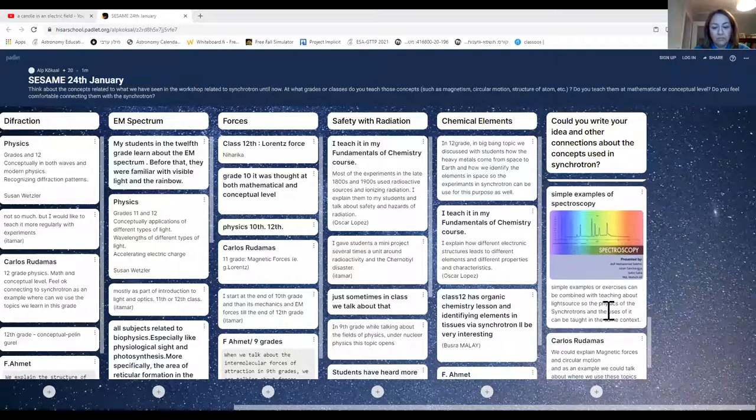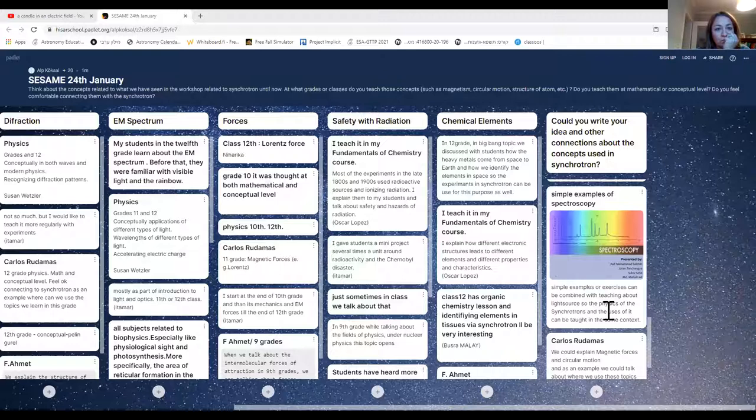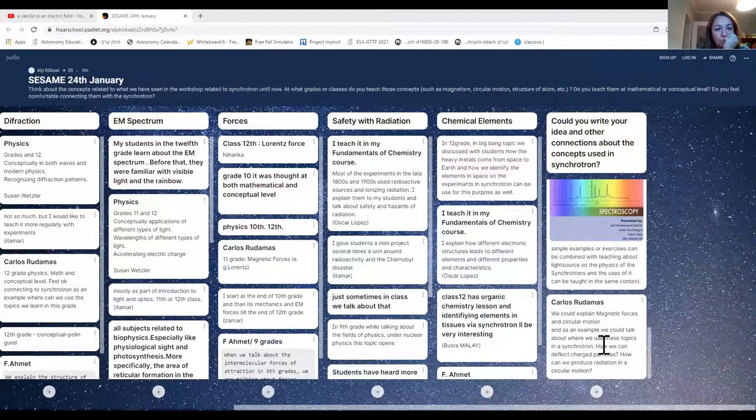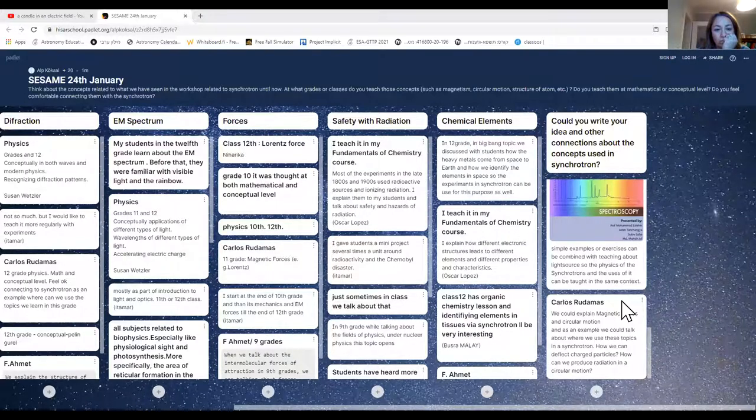Next note we have from Uslan, writes in 11th and 12th grades, we can teach magnetic field, circular motion, electromagnetism, and x rays. During that time, we can explain little information about synchrotrons, and we can plan extra lessons for students who are interested in this subject. This is a great idea. Thank you very much. And the next note is also for me, you can see from the, that I was adding pictures. So it's again, it's a thought. It may reconnect with what Leila said about the interdisciplinary connections. So I thought maybe in physics class, if I teach about the use of magnetic fields and acceleration in synchrotron, then bring small problem as an example of how it's being used, for example, in spectroscopy, without diving into it as a big subject. And last note from Carlos, we could explain magnetic forces in circular motions. And as an example, we could talk about where it's used, where we use these topics in synchrotrons, how we can deflect charged particles, how can we produce radiation in a circular motion. Yeah, I think it's a good, clear idea. Thank you very much, Carlos. You're welcome.